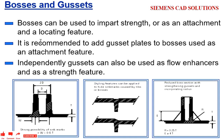It is recommended to add gusset plates to bosses used as an attachment feature. A gusset is nothing but the side support given to the screw boss so that the strength of the boss will be good. Gussets can also be used as a flow reference and as a strength feature. The purpose of a gusset is to provide strength, and if you are adding it to the boss, then your boss will get more strength.